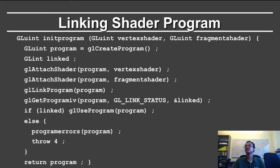The next step is to link the shader program. Given a vertex shader and a fragment shader, I create the program, attach them to the program, and then link the program. Again, I get the link status — if it's linked, I use the program; if not, I throw an exception and print out the errors.